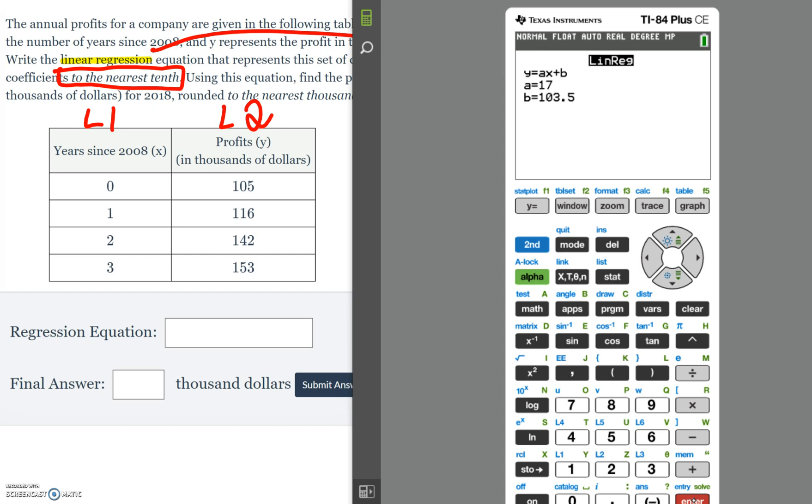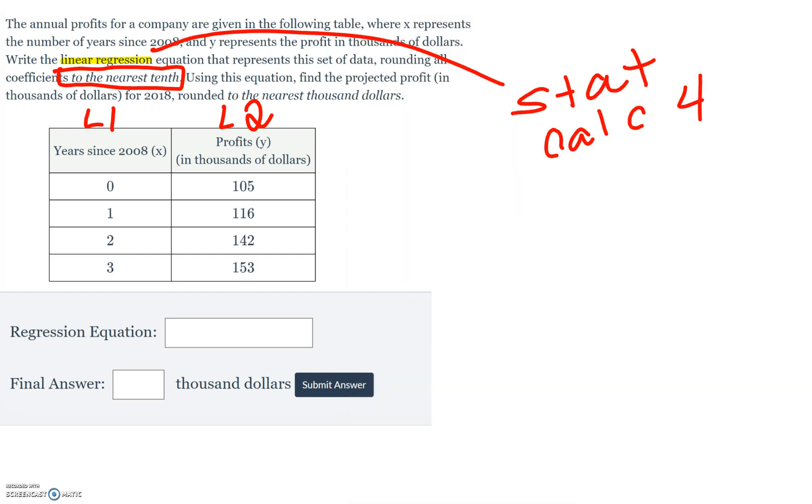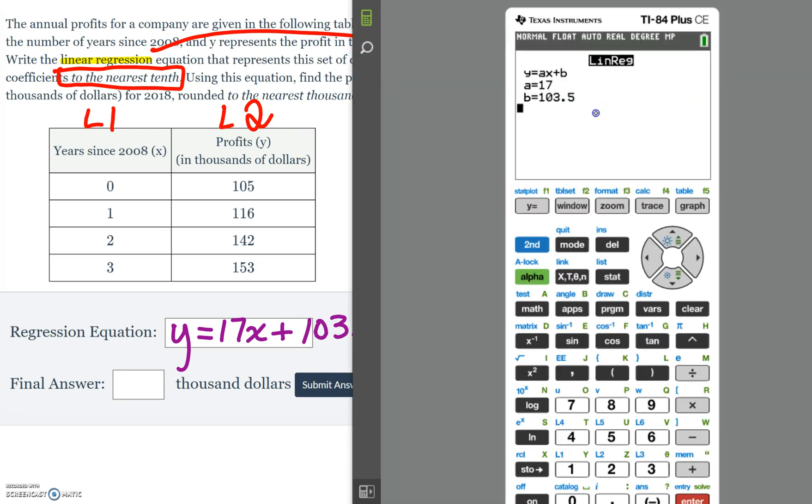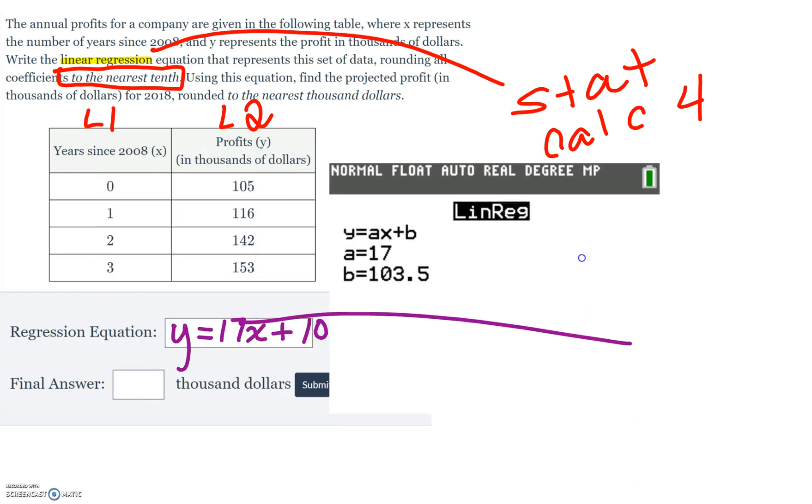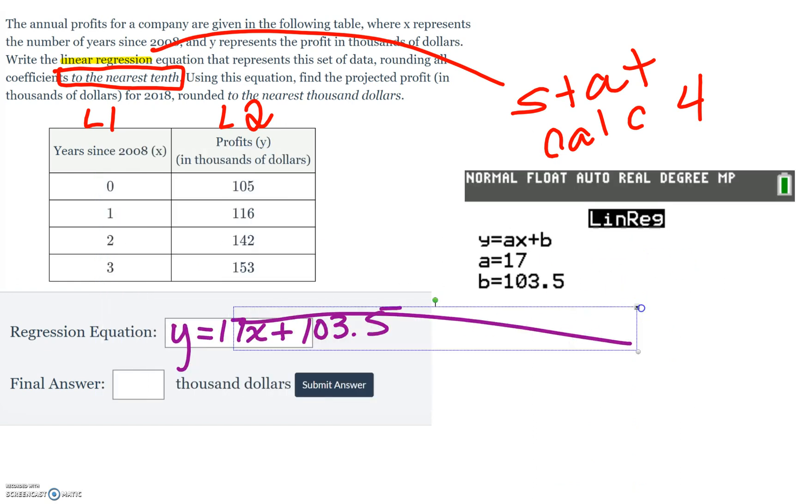So we're going to take those values, and write them as an equation. So it says to the nearest tenth, we don't have to really worry about rounding, because it already is rounded for us. So in the first box, what you would do is put y equals, and then our a value was 17x plus 103.5. So we're just taking those values.